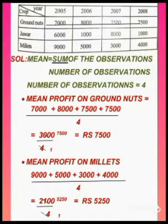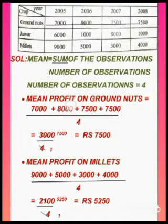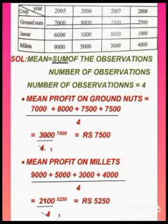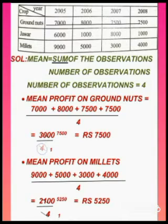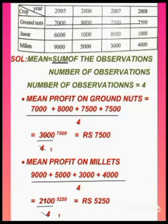Now let us add these observations: 7000 plus 8000 plus 7500 plus 7500. You will get 30,000. Note it is typed wrong as 3000 in the book, so you have to write 30,000. So 30,000 by 4 — if you cancel with the 4 table you will get 7500. The average or mean profit on groundnuts is equal to 7500.